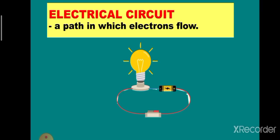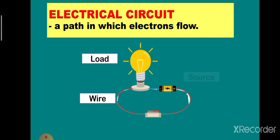Here is an electrical circuit. This is the simple representation of how electricity powers up our devices at home. An electrical circuit is a path in which electrons flow. It is composed of four parts: the load, the wire, the source, and the switch.